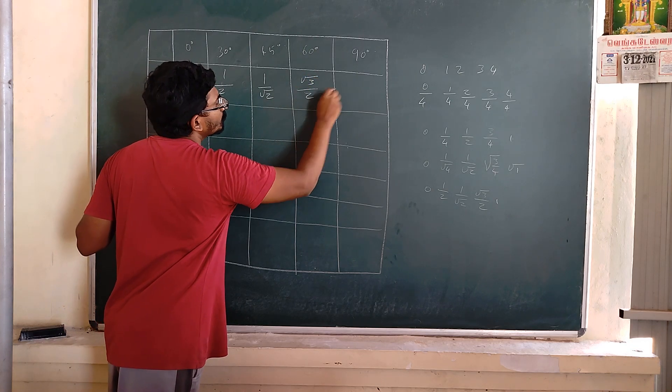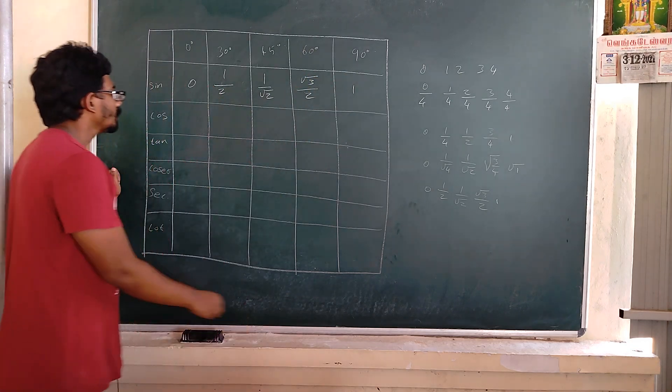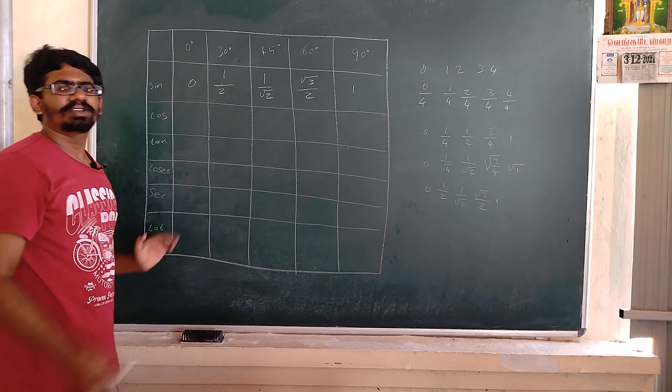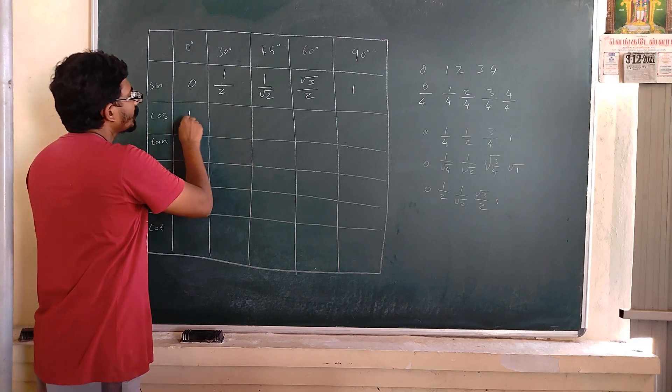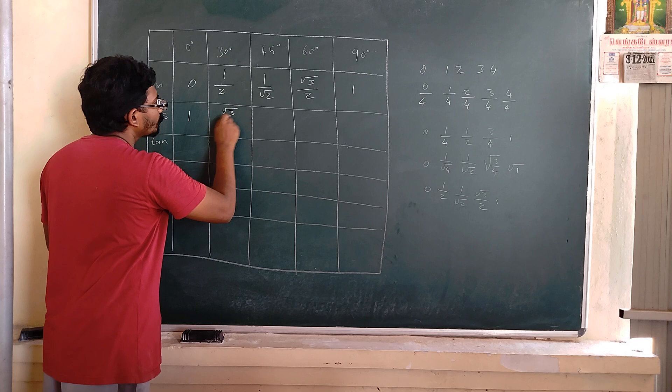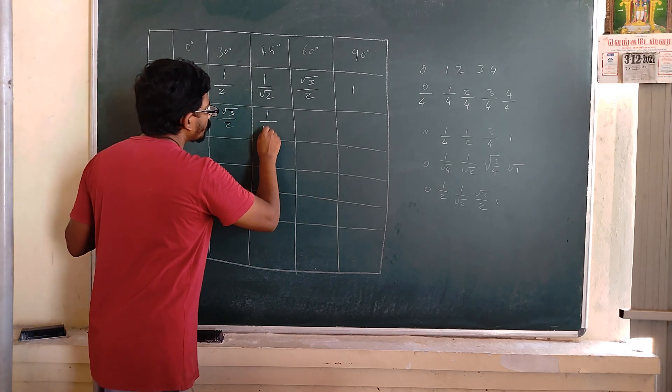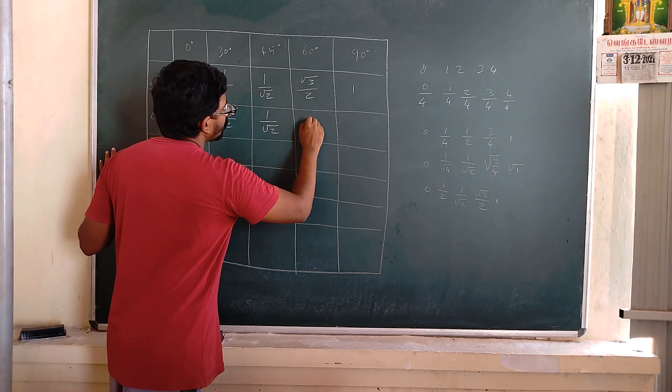Cosine is completely the reverse of the sine table, so you can write it as 1, square root of 3 by 2, 1 by square root of 2, 1 by 2, and 0.